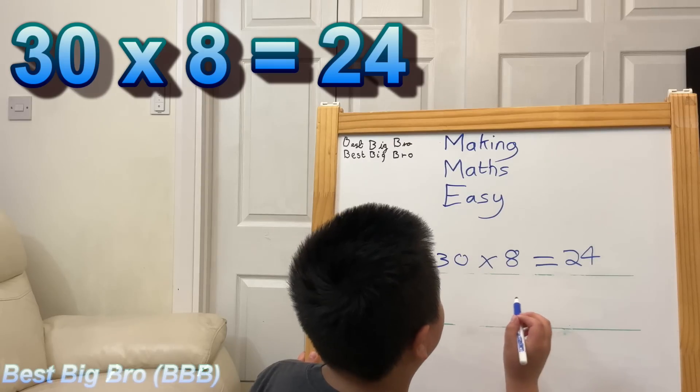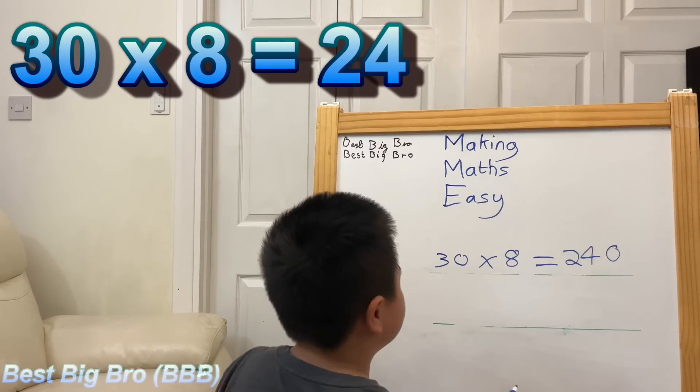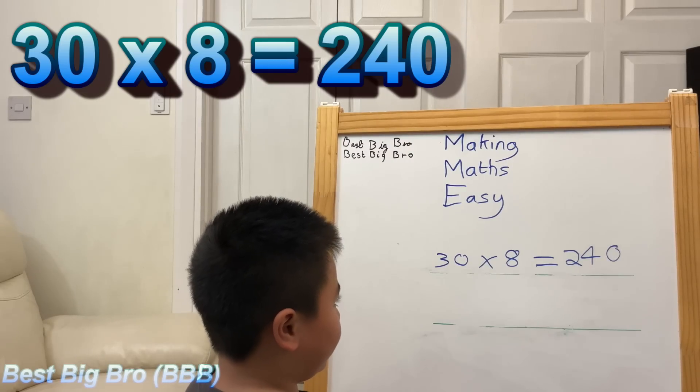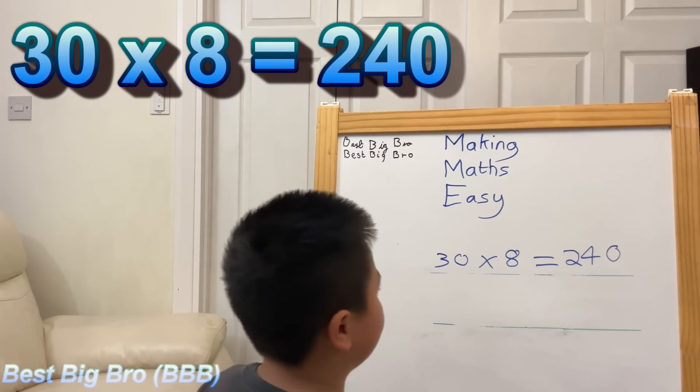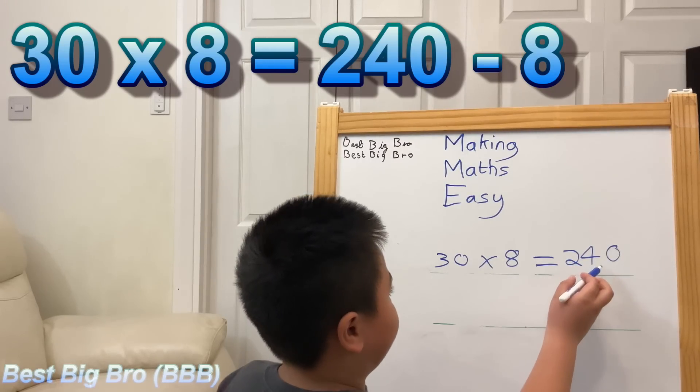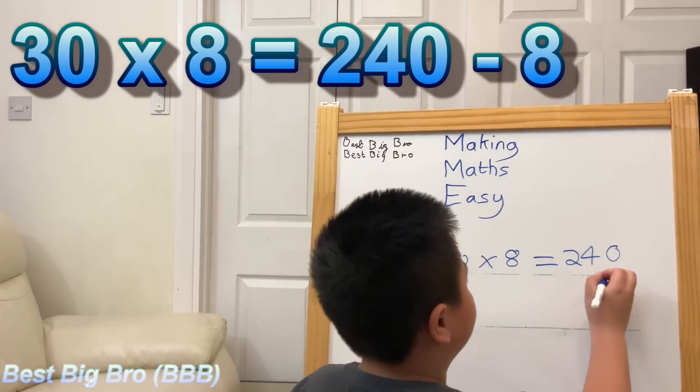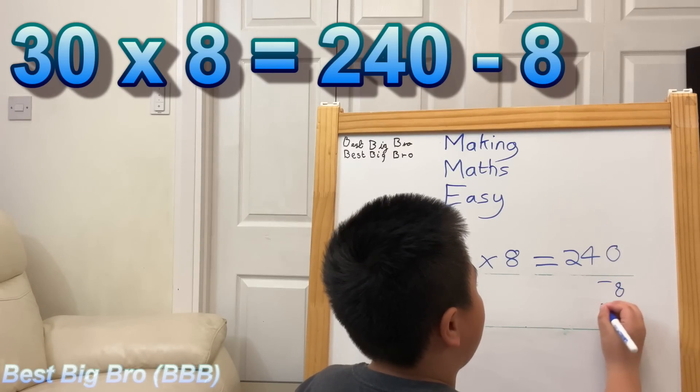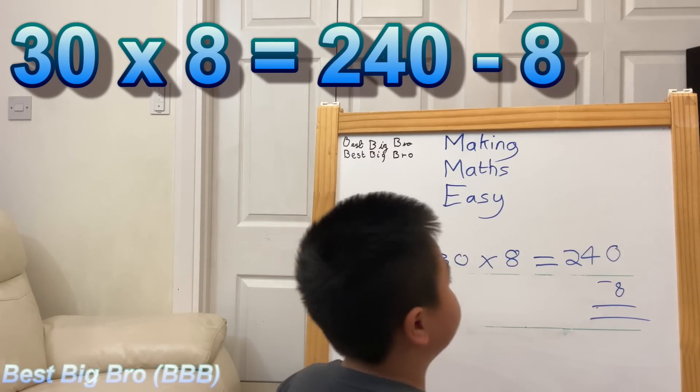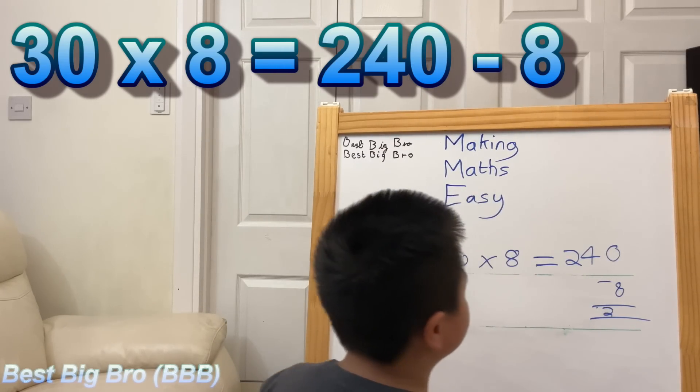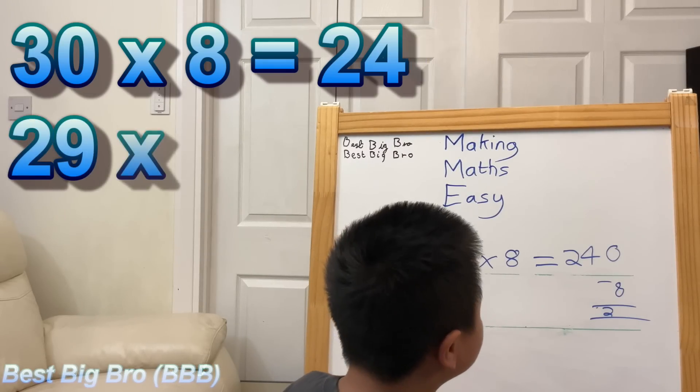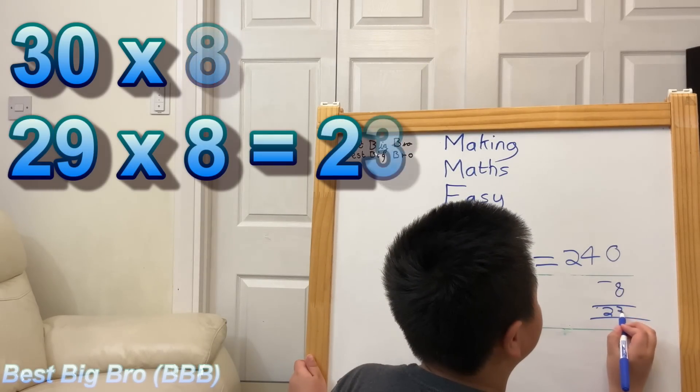Then you add a zero here and here. So now I need to make it 29, so you need to minus an 8 from here. That equals 232.